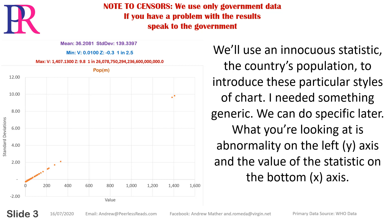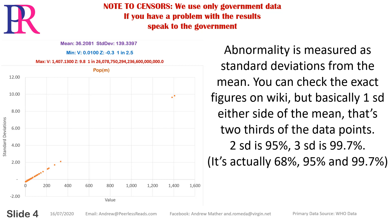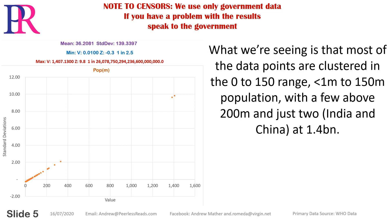What you're looking at is abnormality on the left y-axis and the value of the statistic on the bottom x-axis. Abnormality is measured as standard deviations from the mean. You can check the exact figures on Wikipedia, but basically: one standard deviation either side of the mean covers two-thirds of the data points, two standard deviations is 95%, three standard deviations is 99.7% — specifically 68%, 95%, and 99.7%.